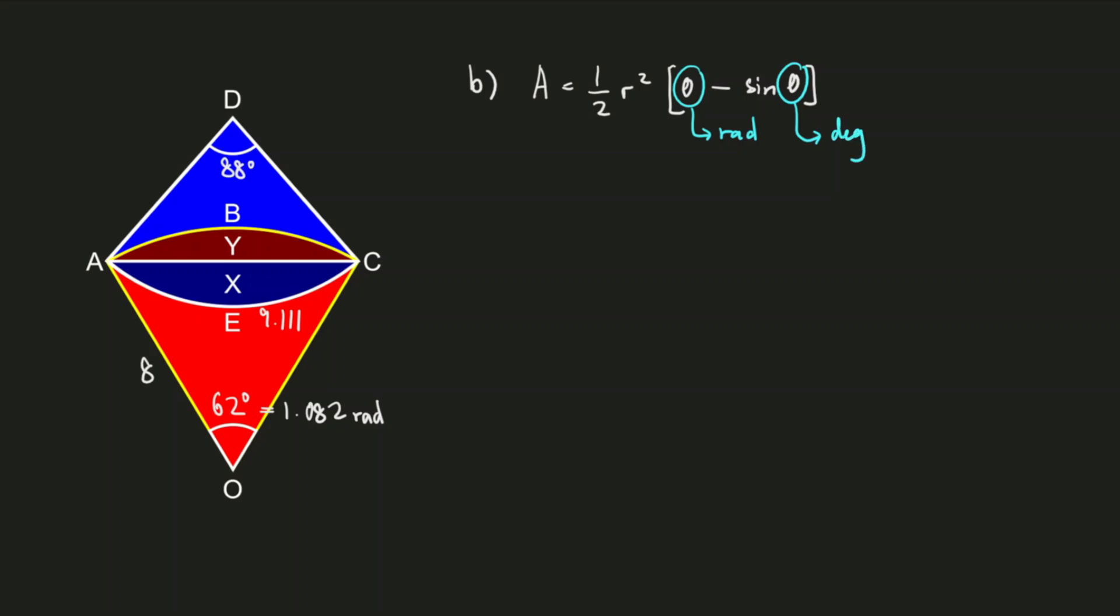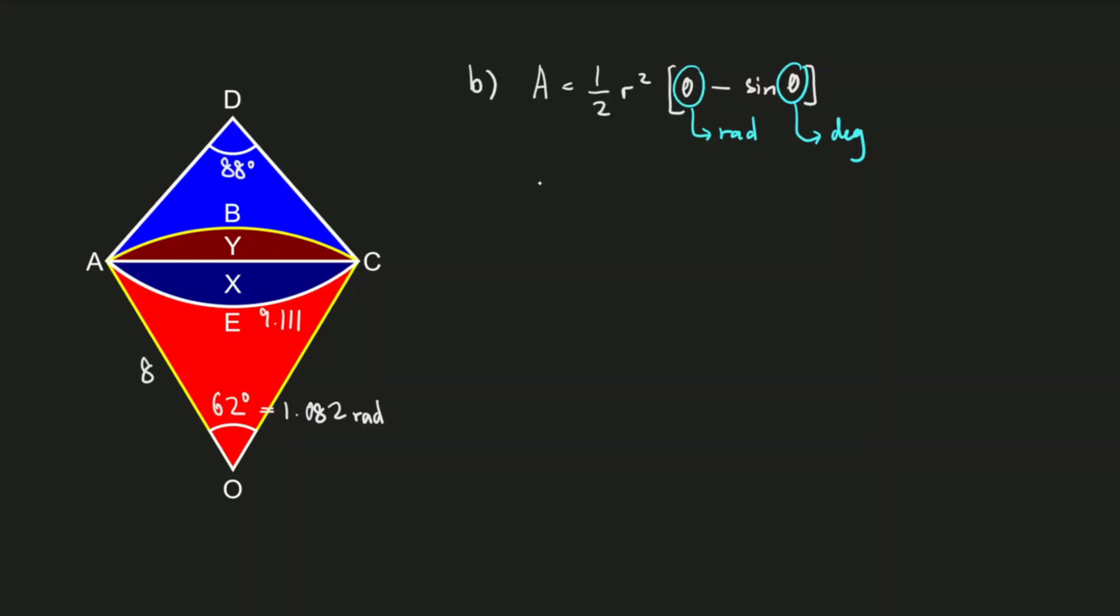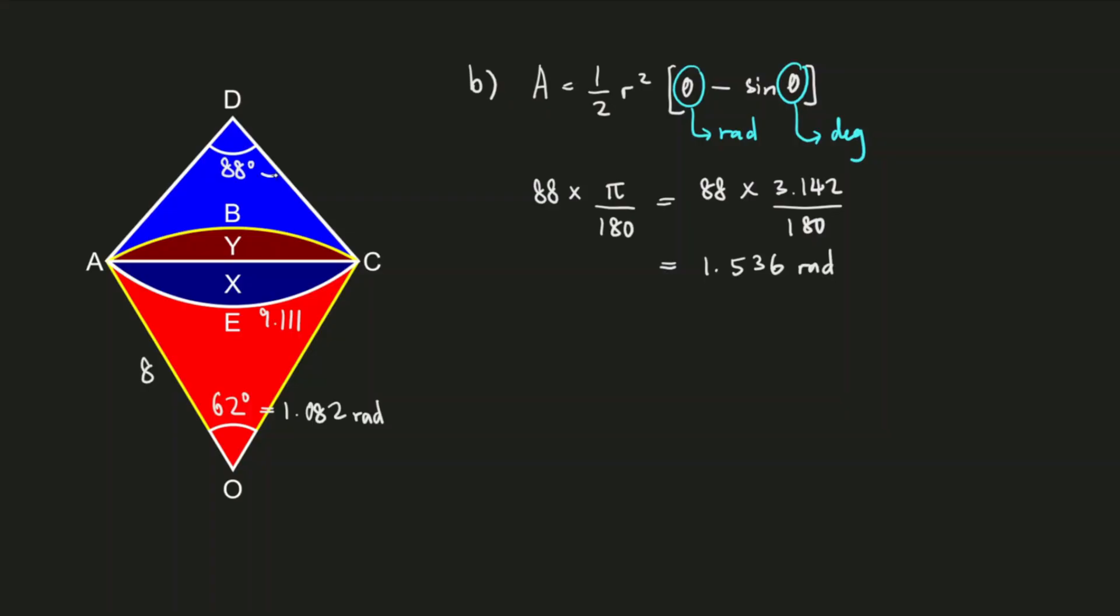So once again we have to convert 88 degrees to radians. Here we are going to use 88 degrees because this segment belongs to the sector ADC. The conversion is the same as earlier: multiply by π ÷ 180. And that is 88 × 3.142 ÷ 180. The value that we get is 1.536 radians.